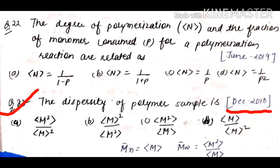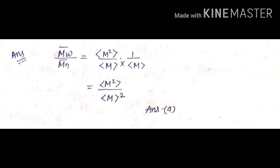Last question from December 2018: the dispersity of a polymer sample is? Dispersity is the same as poly-dispersity index, i.e., M̄W / M̄N. Here M̄N is denoted as M̄ (M average), and M̄W is denoted as M² average / M average. Putting these values in: dispersity = (M² average / M average) / M average = M² average / (M average)². So answer is A.